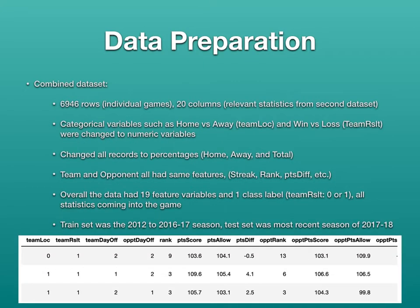For the combined dataset, it was about 7,000 rows and 20 columns. I combined these by taking the team abbreviation along with the game date and merging the two datasets together. From there, I took the relevant statistics from the second dataset to apply to each specific game. I took the categorical variable of team location — home versus away — and changed it to numeric: zero for away, one for home.